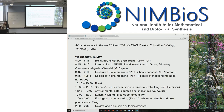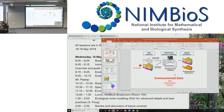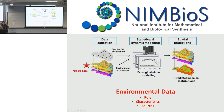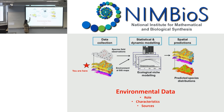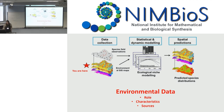Now that you've heard all about the challenges of occurrence data, let me further bother you with all the challenges of environmental data. In our big modeling schematic, we just talked about occurrence data, and now we're going to be talking about the environmental data that you're going to be throwing into your algorithm to get your output. We're going to talk about the role of environmental data, the characteristics, and the sources.